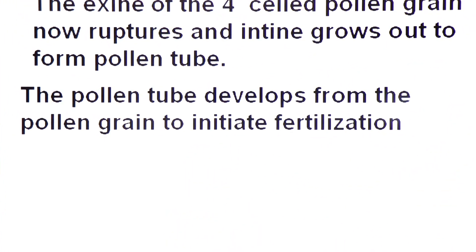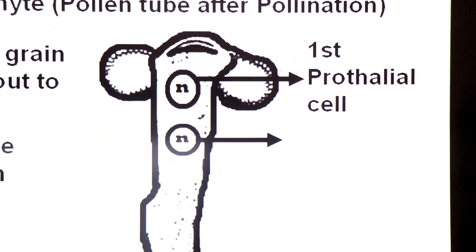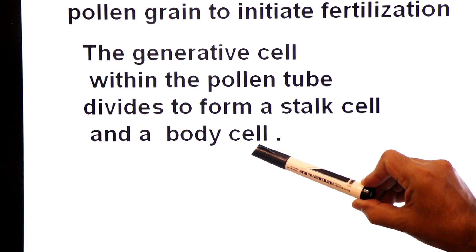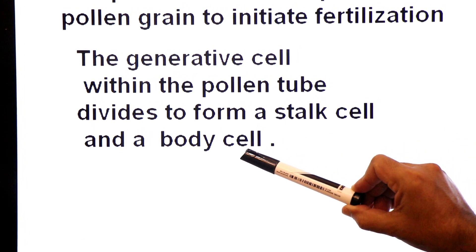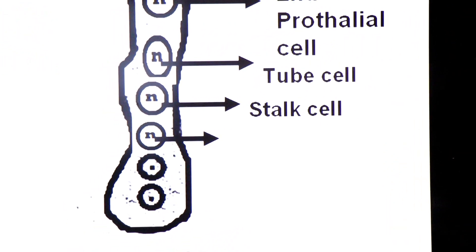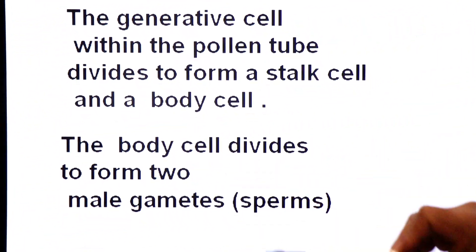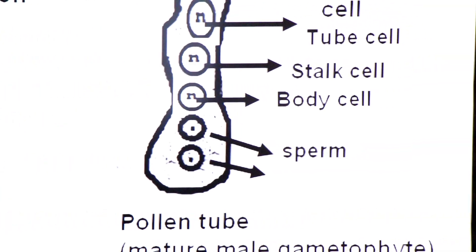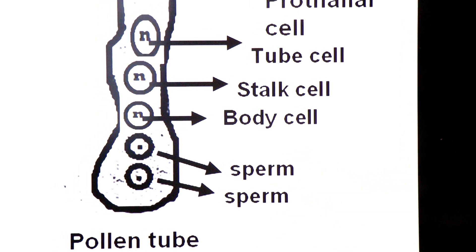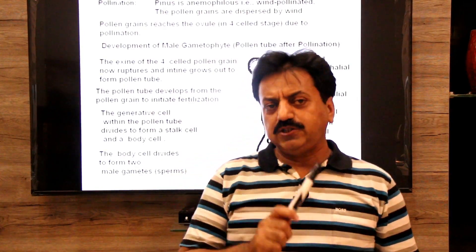The pollen tube develops from the pollen grain to initiate fertilization. Fertilization by pollen tube is called siphonogamy. The generative cell within the pollen tube divides to form a stalk cell and a body cell. Remember: the immature male gametophyte is the pollen grain and the mature male gametophyte is the pollen tube.